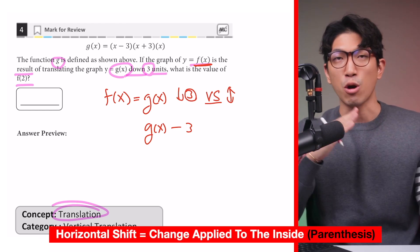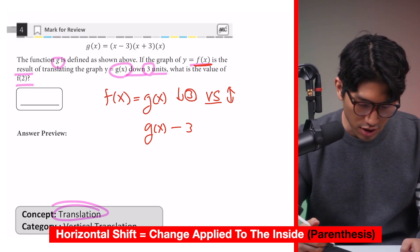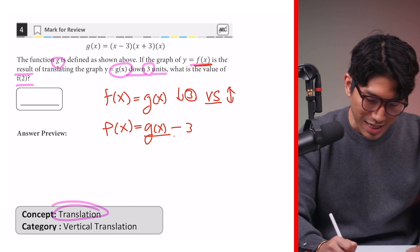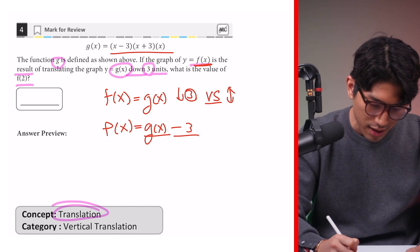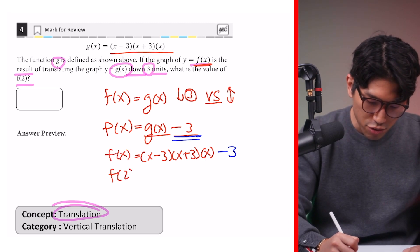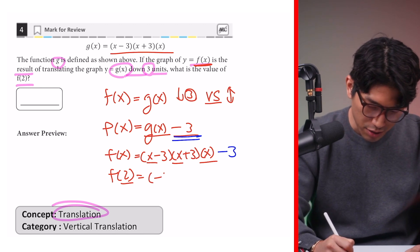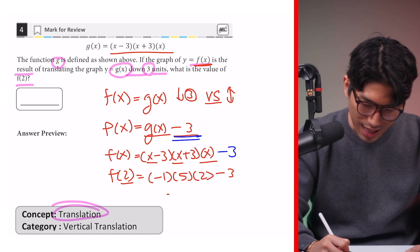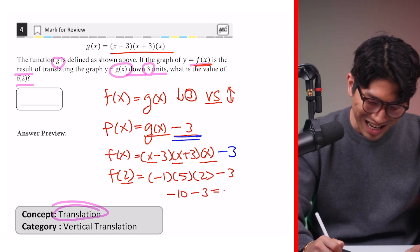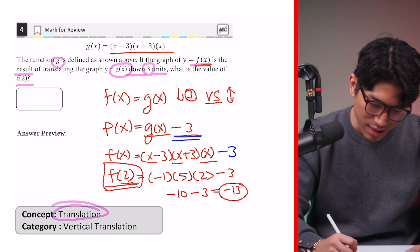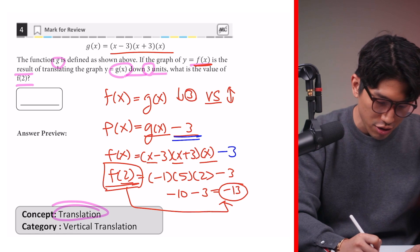So in this case, it would be g of x minus 3 because we're moving it down 3 units. The second thing is going to be the horizontal shift, but we'll get to that in a second. Let's first finish solving this question. And now we know that f of x is essentially the same thing as g of x minus 3. And we're simply going to copy this part down. And that is f of x. And because we're looking for f of 2, we simply plug in 2 for the x's over here, which gives us minus 1, 5, and then 2 minus 3. And if we multiply all this out, we're going to get negative 10 minus 3, which is negative 13. So that tells us f of 2 over here is going to be the same thing as negative 13 over there. So our answer is going to be negative 13.